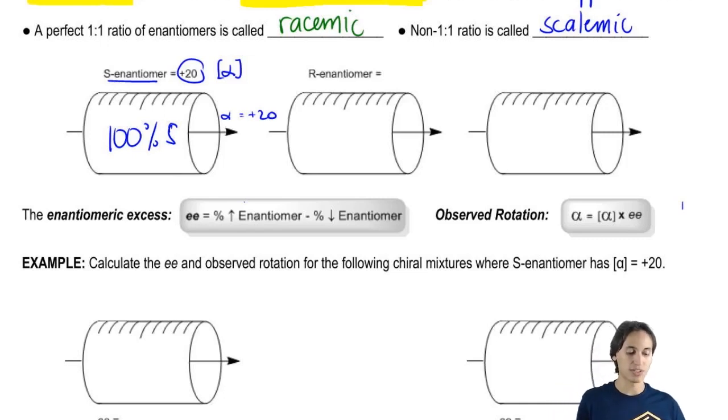Then the R enantiomer, let's say that my S enantiomer is positive 20, but let's say that I have 100% of my R enantiomer in here. So now I just mixed it up, then what would that be? What that would give me is negative 20 because it has an opposite configuration. So my observed would also be opposite.